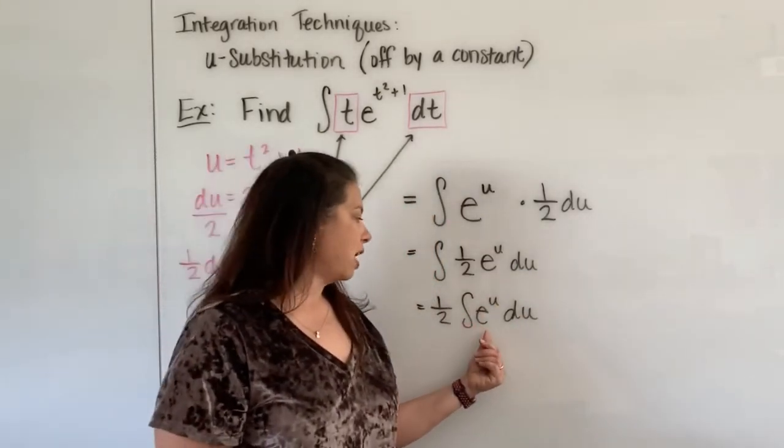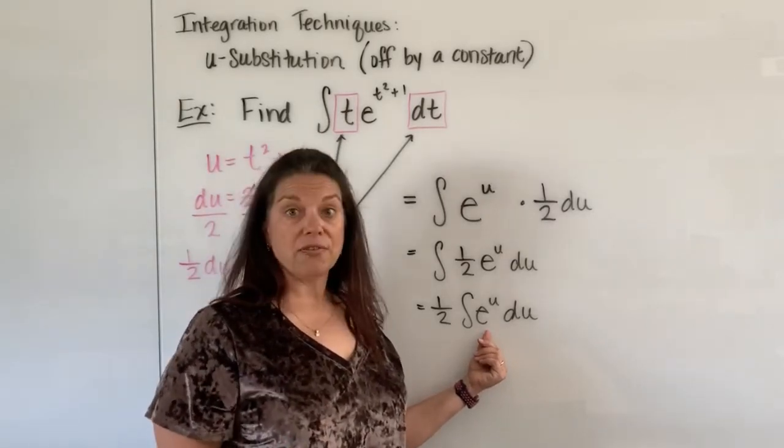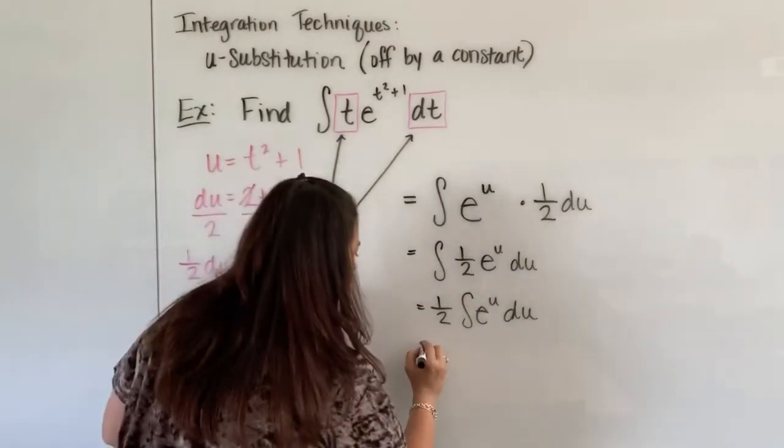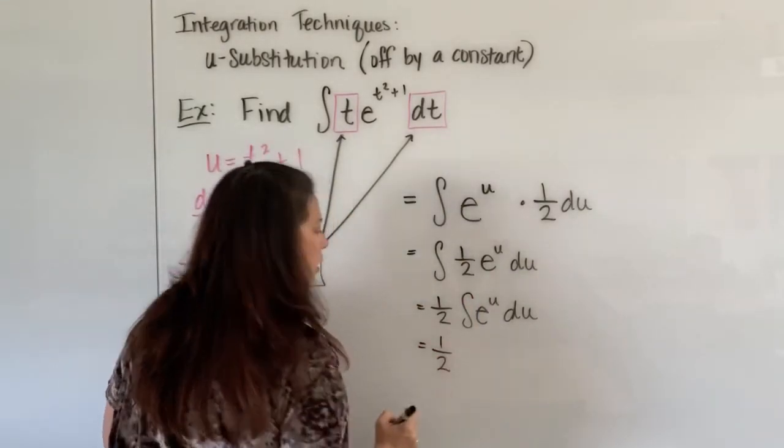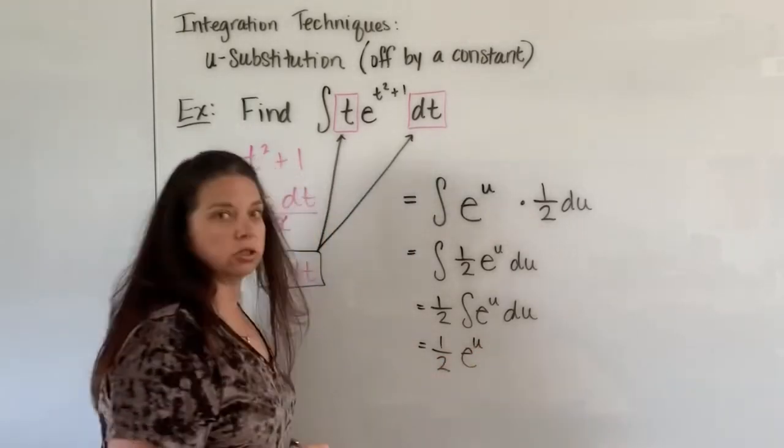And now we've seen several times already the integral of e to the u. Well that's our favorite. Integral of e to the u is just e to the u. So we have now 1 half that's still out front times the integral of e to the u. That's just e to the u.